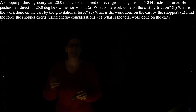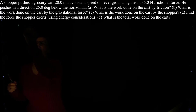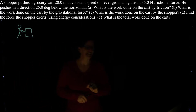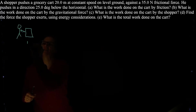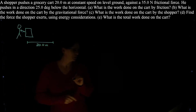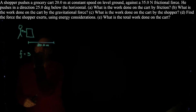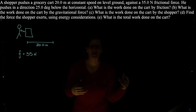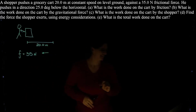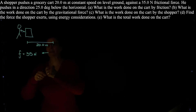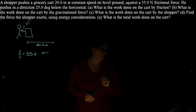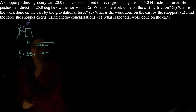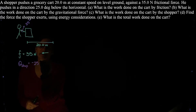Let's first identify our picture. Here we have our shopper pushing a cart down at an angle, moving it 20 meters across the store floor. The frictional force acting on the object is 35 newtons, and because it's moving along a horizontal surface and friction opposes motion, friction points in the leftward direction. The force applied by the shopper is 25 degrees below the horizontal — negative 25 degrees relative to the displacement.